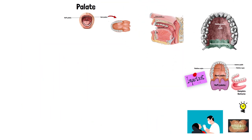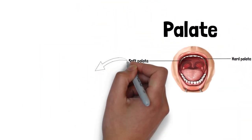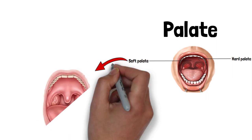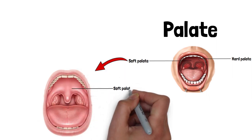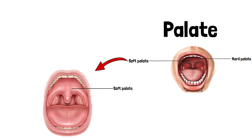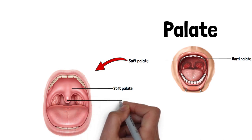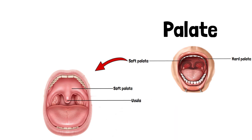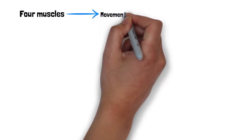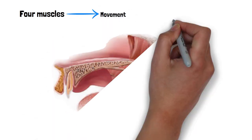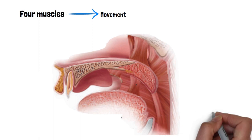The hard palate continues posteriorly into the soft palate. The soft palate can get depressed to close the oropharyngeal isthmus, and also can get elevated to separate the nasopharynx from the oropharynx. A small pear-shaped projection hangs from the soft palate known as the uvula. Since the soft palate is movable, it is formed by four muscles which allow it to move, and one more muscle associated with the uvula — so in total five muscles are associated with the soft palate.